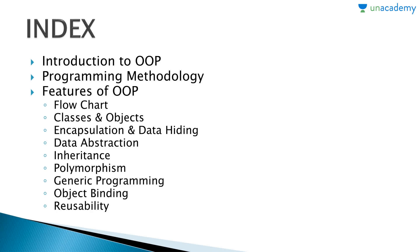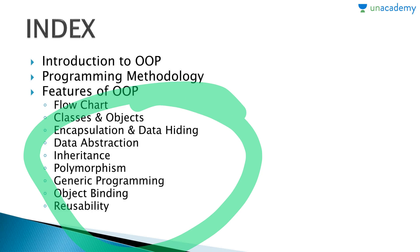Then the features of OOP — what features it has. These include a flowchart showing the basic structure, then classes and objects, encapsulation and data hiding, data abstraction, inheritance, polymorphism, generic programming, and object binding and reusability. We are going to discuss all of this, but only the basic things right now.